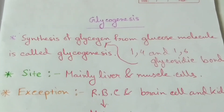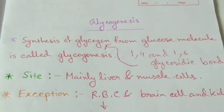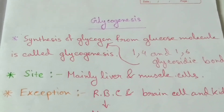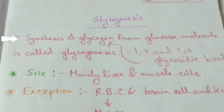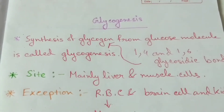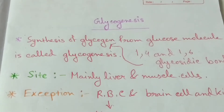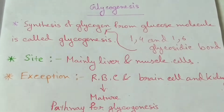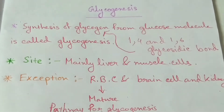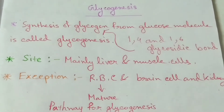Genesis means the synthesis pathway. The synthesis of glycogen from glucose molecule is called glycogenesis pathway. Glycogen are the polysaccharide of glucose molecule.